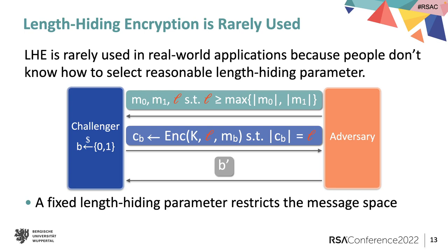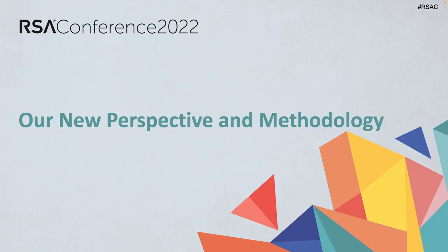Fixing a length-hiding parameter means fixing the ciphertext length for all messages, and this restricts the upper bound of message length to be encrypted. So it makes sense to select a length-hiding parameter which is larger than the length of the longest message in that application. This is super undesirable because many applications have no upper bound or very large upper bound for their message length, and encrypting every message — even only a single bit — to the length of a very large length-hiding parameter will impose significant bandwidth overhead and very undesirable efficiency loss.